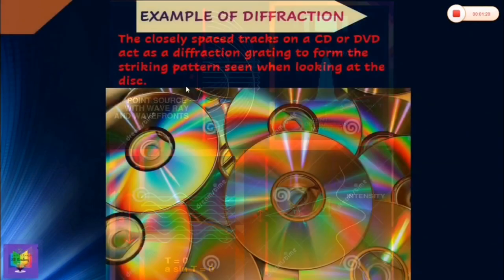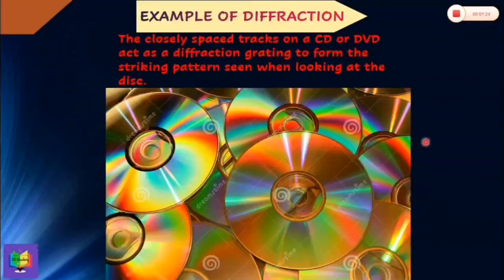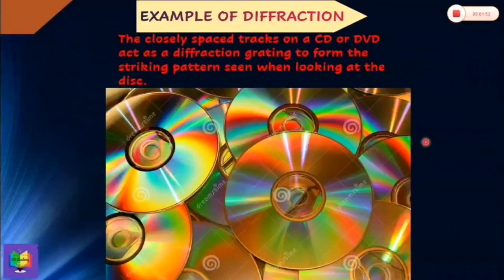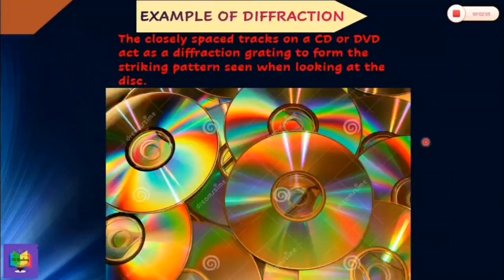There are two kinds of diffraction: Fresnel and Fraunhofer. In Fresnel diffraction, the source and screen are not far away from each other; incident wavefronts are spherical, wavefronts leaving the obstacles are also spherical, and no convex lens is needed. In Fraunhofer diffraction, the source and screen are far away; incident wavefronts on the diffracting obstacle are plane, the obstacle gives rise to plane wavefronts, and these are converged by a convex lens to produce the diffraction pattern.